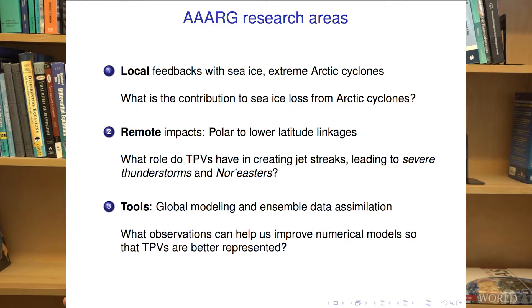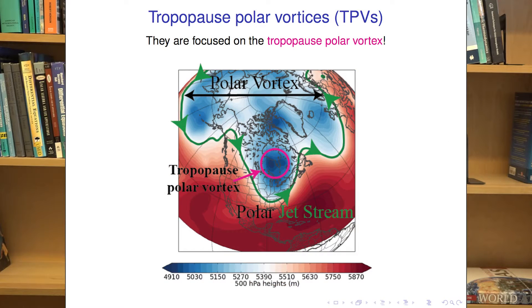These are the polar to lower latitude linkages. For instance, what role do tropopause polar vortices have in creating jet streaks in the mid-latitudes, and does that lead to severe weather, thunderstorms, and nor'easters? Another focus area is global and high-resolution modeling, since studying both the Arctic and mid-latitudes requires a large domain. We're developing a global model and ensemble data assimilation so we can get a probability sense of what might be happening in the forecast. One of the features I focus on a lot in my research are called tropopause polar vortices, or TPVs for short.